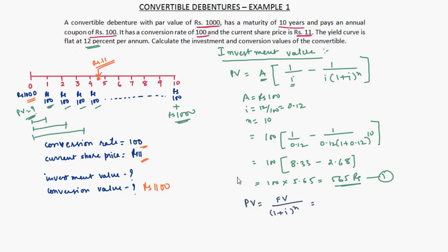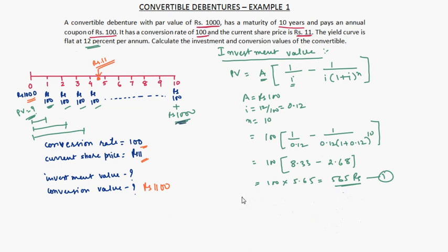Second, we need to find the present value of the rupees 1000 principal received at the end of 10 years. The formula for present value is: future value divided by 1 plus i to the power n. Future value is 1000, so this is 1000 divided by 1 plus 0.12 to the power 10.